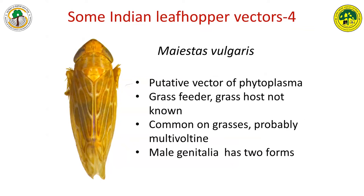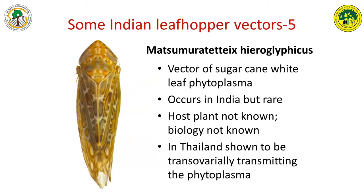Then there is Matsumuratettix hiroglyphicus. This has been recently implicated as a vector, but I'm not sure it is a confirmed vector. There is also one from India which is a confirmed vector of sugarcane white leaf in Thailand. Not only that, it can transmit the phytoplasma from mother to offspring — what we call transovarial transmission. We do have this species here, but so far, persons working on sugarcane white leaf disease in India have not looked at it.